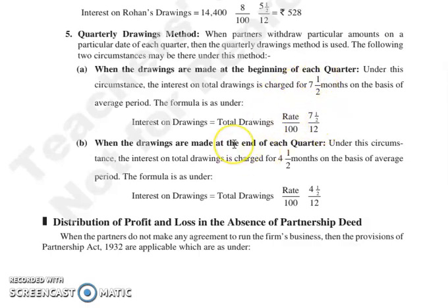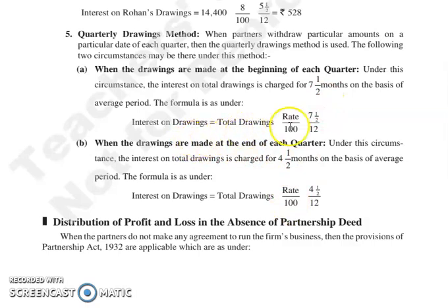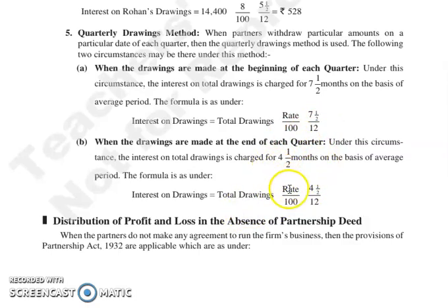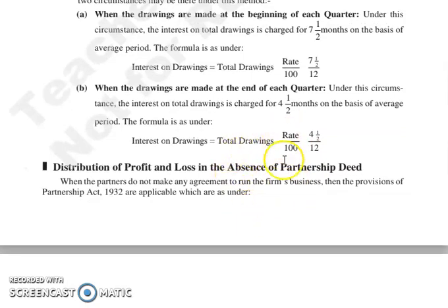Yaha par jab hum quarter le rahe hain, to quarter jo hota hai woh three months ka hota hai. Pure year mein four quarters hote hain. Agar pehle aap nikal rahe ho in the beginning of each quarter, to number of months aayenge aapke 7.5. To interest on drawings calculate karna hai: total drawings into rate upon 100 into 7.5 divided by 12. Agar at the end of quarter nikal raha hai, to aata hai 4.5 months. Total drawings into rate upon 100 into 4.5 divided by 12.